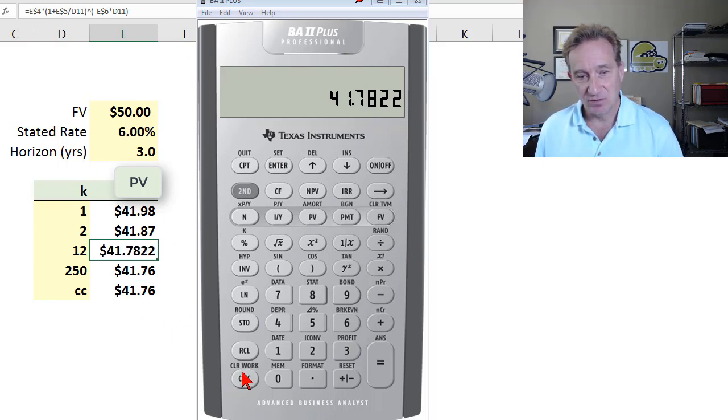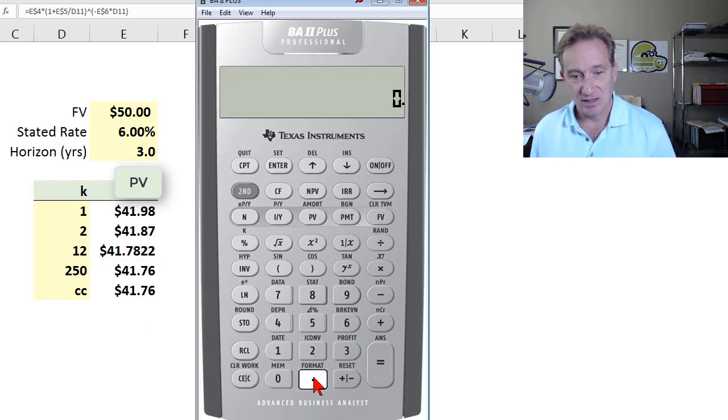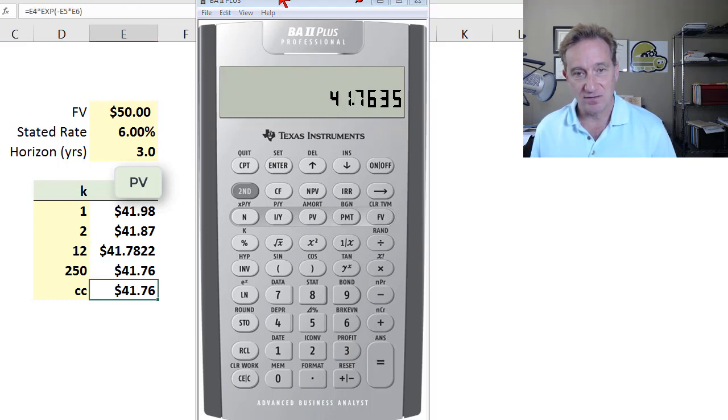And now if I want to do it in continuous terms, I just take the 6% rate, multiplied by three years, I get my 18%, but I make it a negative, I'm discounting instead of compounding. And then I do second function, e to the x gives me my discount factor. And I multiply that by 50. And I get $41.7635. It's a match.